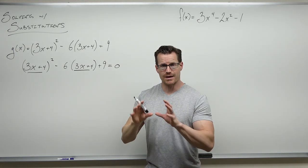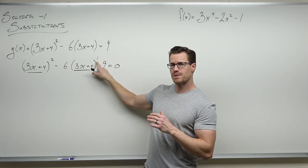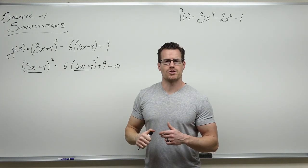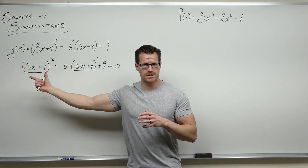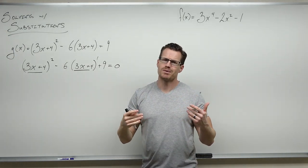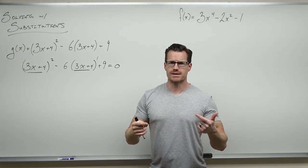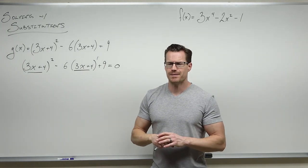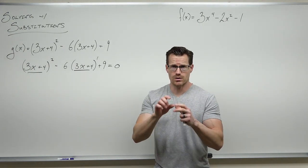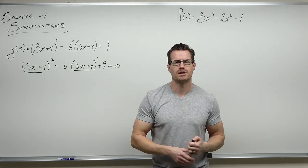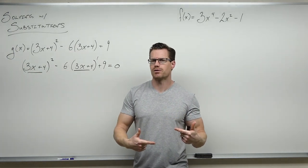If we can write this with a term being raised to the second power and the same expression raised to the first power — like (3x+4) squared and (3x+4) — that tells you what your substitution is. We call that common piece u. That prepares you for doing a u-substitution when you get to Calculus 2. We call it just u, substitute, and then come back to it later.